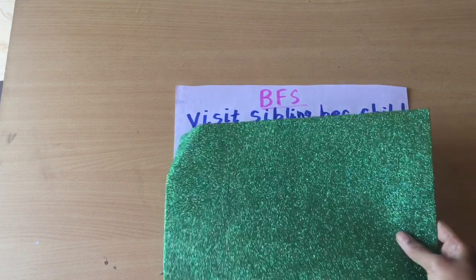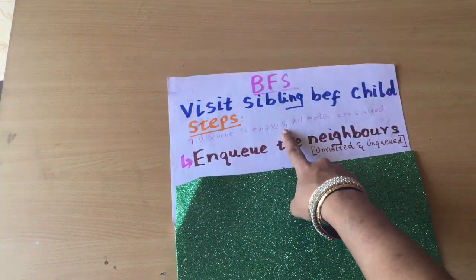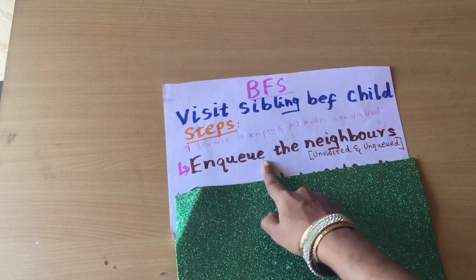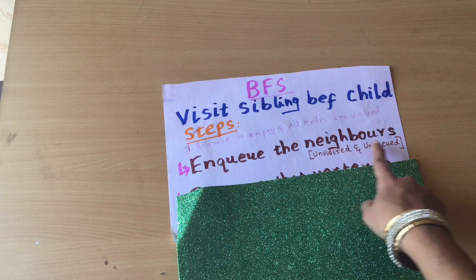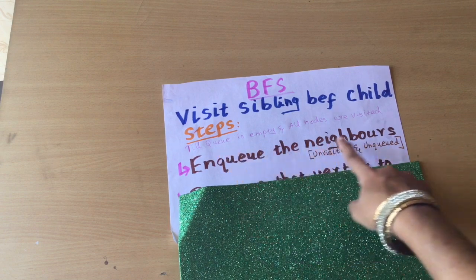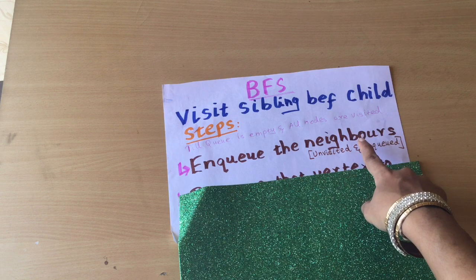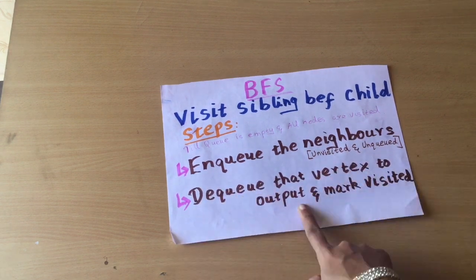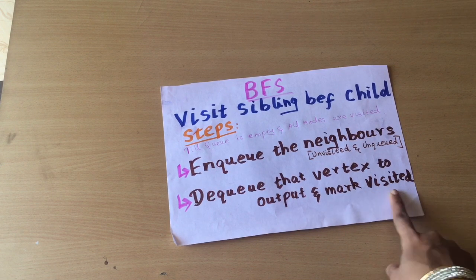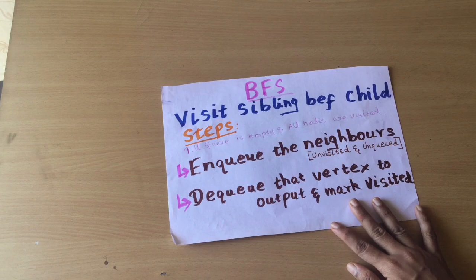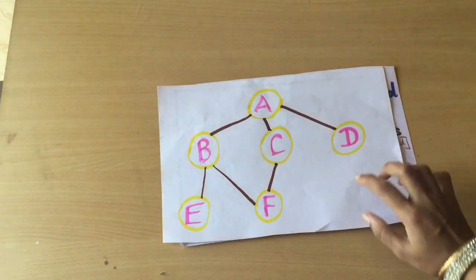The steps for performing BFS: until the queue is empty and all nodes are visited, you should follow two steps. First, enqueue the neighbors - those neighbors should be unvisited and unqueued. Second, dequeue that vertex to output and mark it visited. The vertex whose neighbors you are enqueuing should be dequeued and marked as visited.